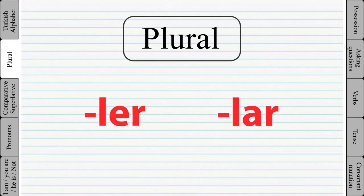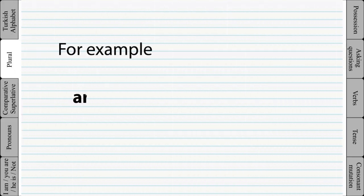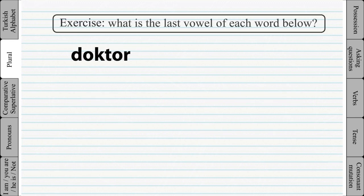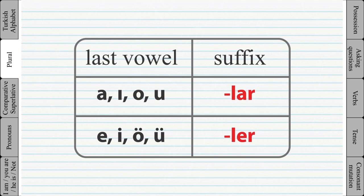To make a word plural, we add either -ler or -lar. Which one to use depends on the last vowel of the word. These are the vowels in the Turkish language. For example, the word 'araba' — the A is the last vowel of the word — while in the word 'okul' the U is the last vowel. Look at the table below to see which suffix should be used to make a word plural.